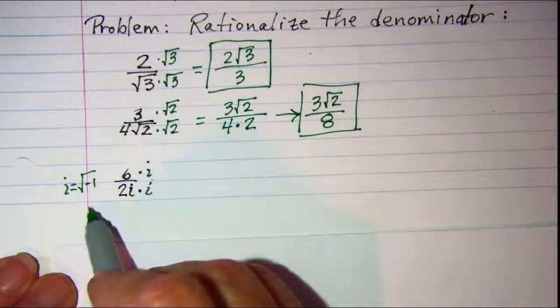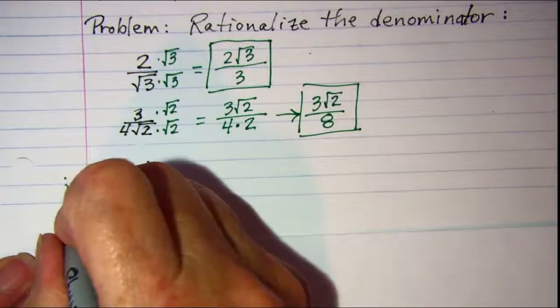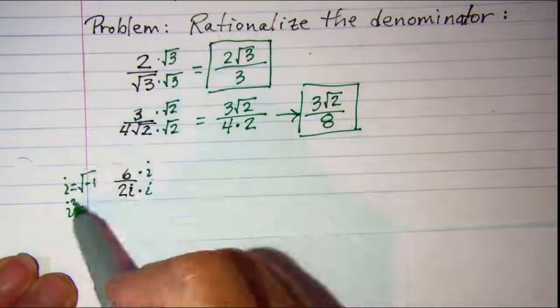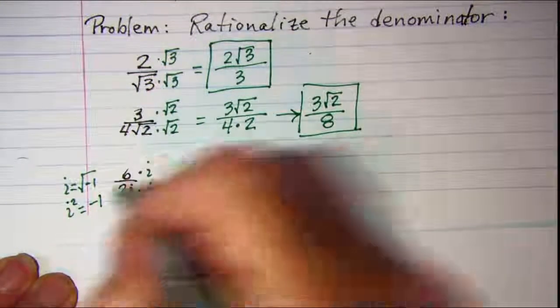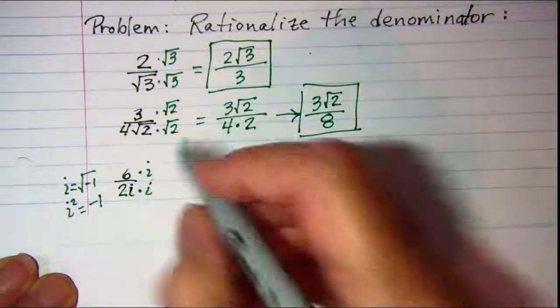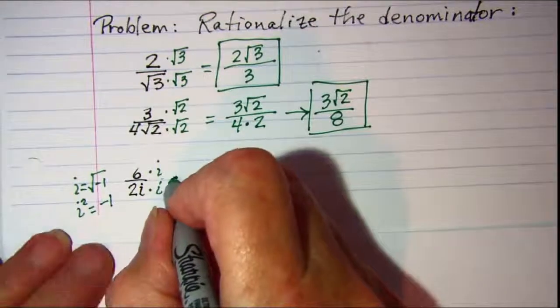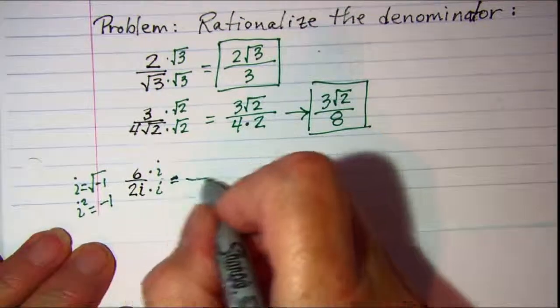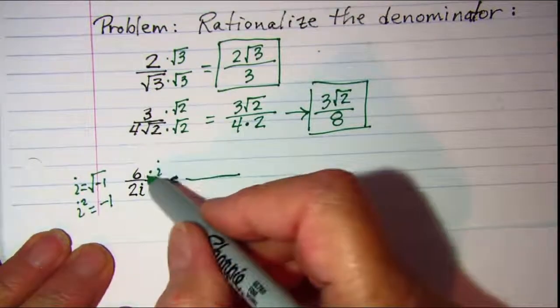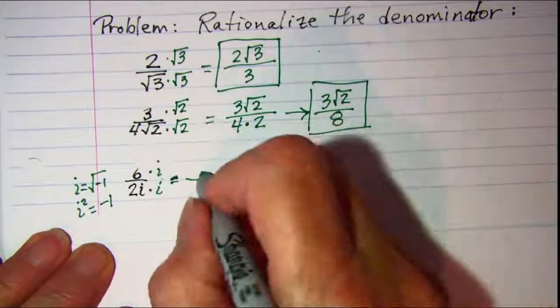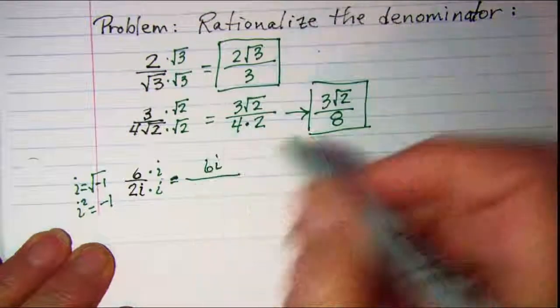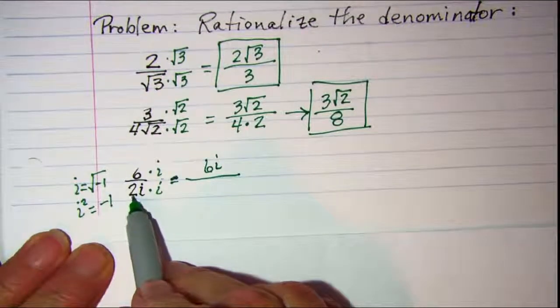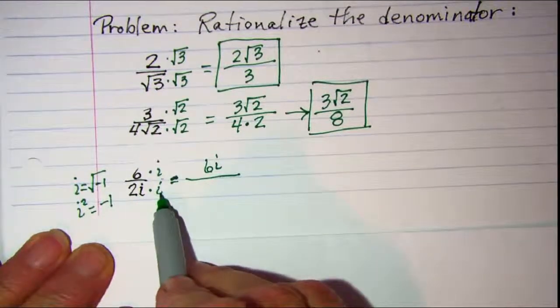Remember that if we square both sides of this equation, I have i squared is equal to negative 1. So when I simplify this fraction, in the numerator I have 6 times i which is 6i. And in the denominator I have 2 times i squared.